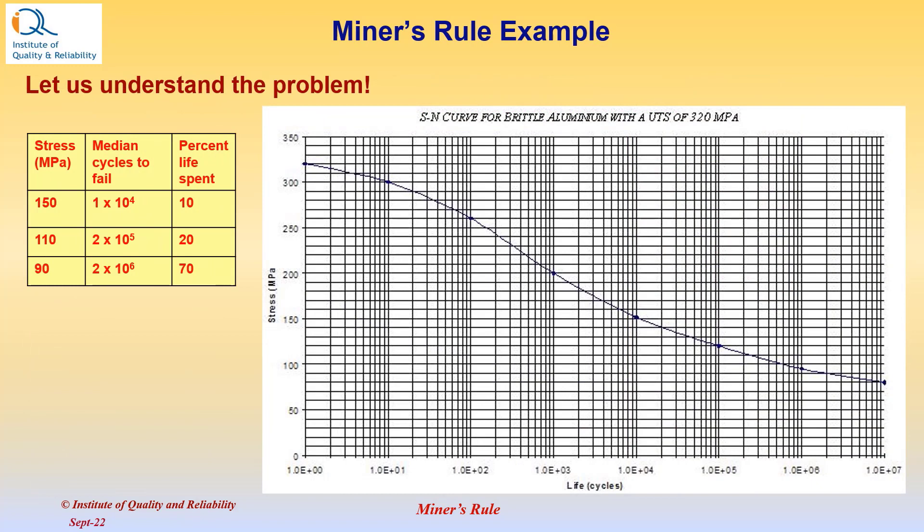In the first step, we can estimate the median cycles to fail from the SN curve. For the first stress level, that is at 150 MPa, we can see that the estimated median cycles to fail is 1×10^4.